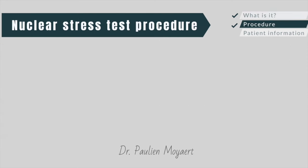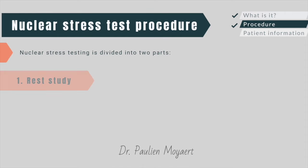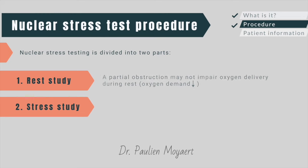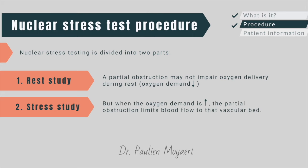Nuclear stress testing is typically divided into two parts: one where the patient is at rest and one during exercise. The principle behind this approach is that a partial obstruction may not impair oxygen delivery during rest when the oxygen demand is quite low. On the other hand, when oxygen demand is high, as during exercise, the obstruction may limit blood flow to the heart and decreased amounts of radiopharmaceutical reach that area.